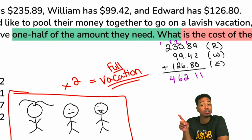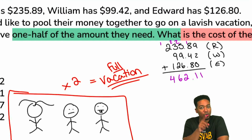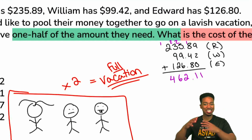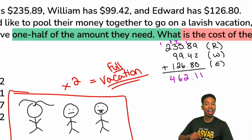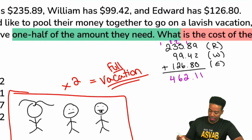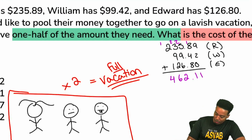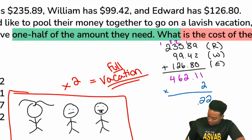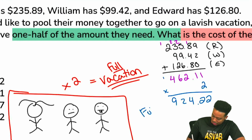The amount they all have together is only half of what they need for the vacation. So we multiply $462.11 by 2 to get the full vacation cost. Two times 11 cents is 22 cents, 2 times 2 is 4, 6 times 2 is 12 — carry the 1 — giving us $924.22. That right there is the full cost of the vacation.